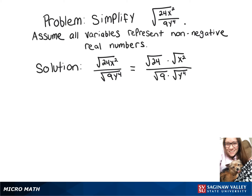So now we want to think of multiples of 24 that are perfect squares. So we can now break that up into the square root of 4 times 6.